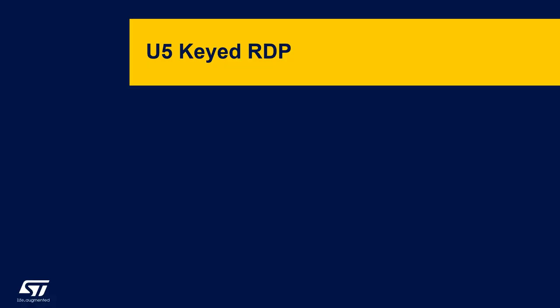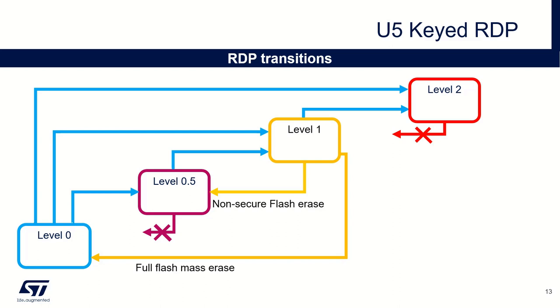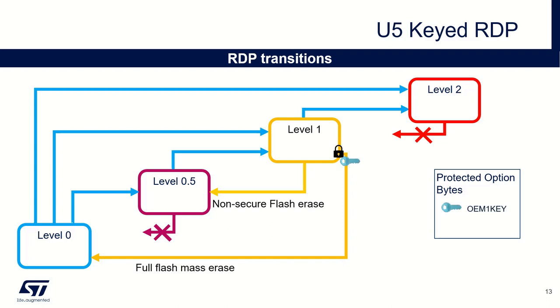After this short reminder about the RDP, let's talk now about this new feature: U5 CAID RDP. RDP transitions previously described are still valid on STM32U5 and can be used as they are. To activate the RDPCAID feature, you will have to provision keys in protected option bytes. Those option bytes access rights are write only, that means you can write in those option bytes but you can't read them. First, you can provision the OEM1 key. This one allows to control the RDP regression from level 1 to level 0. In other words, you need to know this key value to be able to trigger this regression.